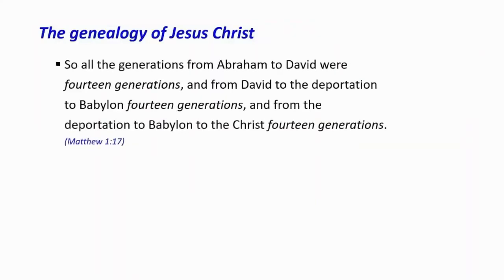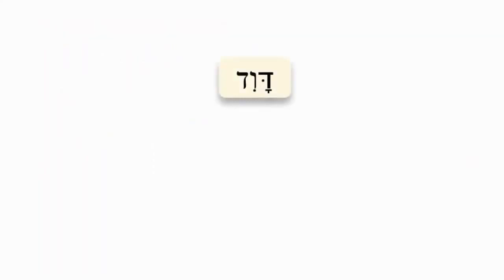Since we didn't finish verse 17 last week, let me share this with you. It says 14 generations three times. What's the significance of 14 generations? To better understand this, we have to get into the word 'David' in Hebrew. As you can see, we have three letters here — just like in English if you have ABC, that's a three-letter word. In Hebrew, you read from right to left.